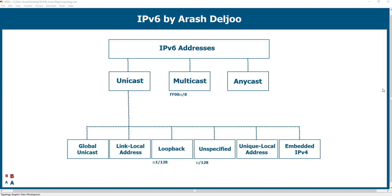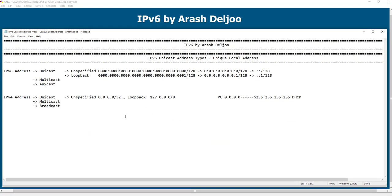In this video, I want to talk about unicast IPv6 addresses, and now I want to start talking about the Unique Local Address, or ULA. This is the next type of IPv6 unicast address. Let's first review IPv4 to find a counterpart for this type of address. In IPv4, we can use a special range for unicasting that we call RFC 1918, or the private IP address range.